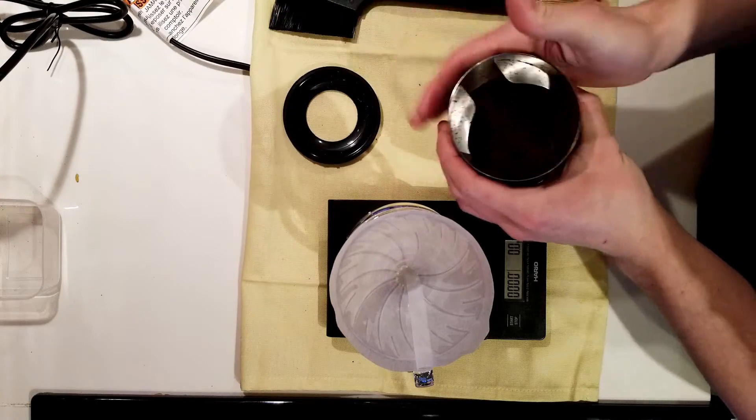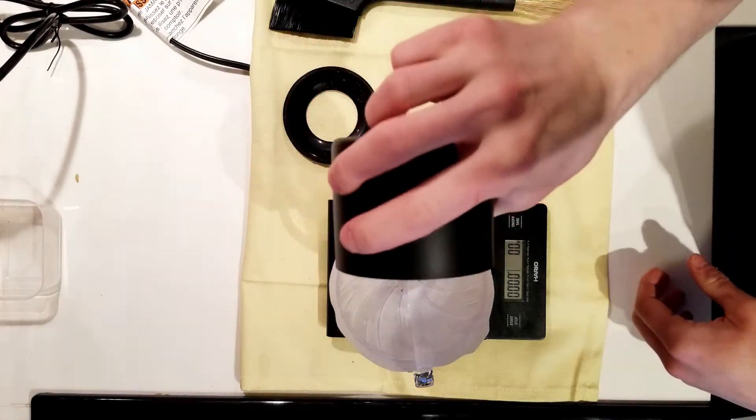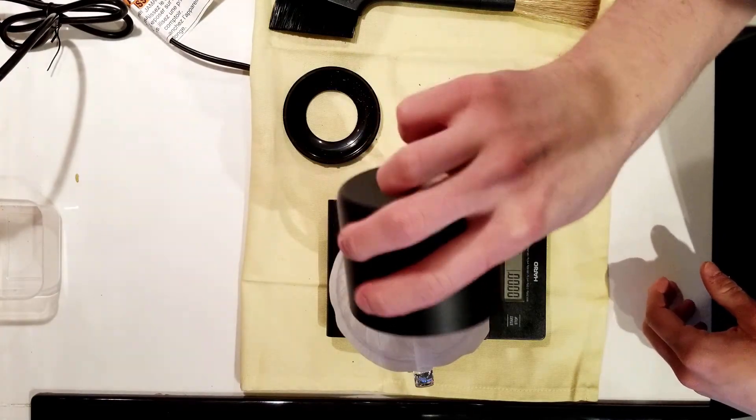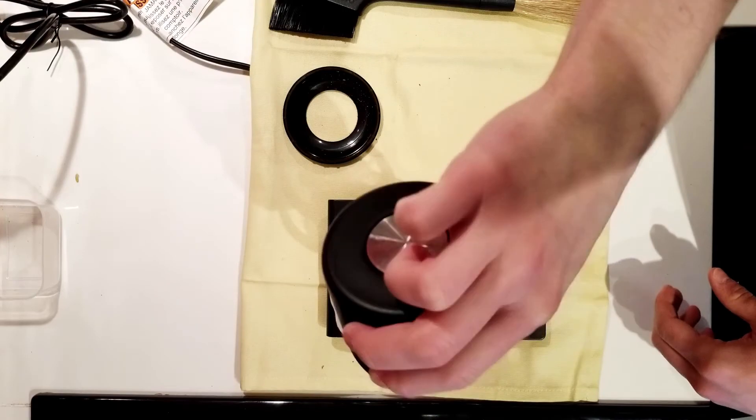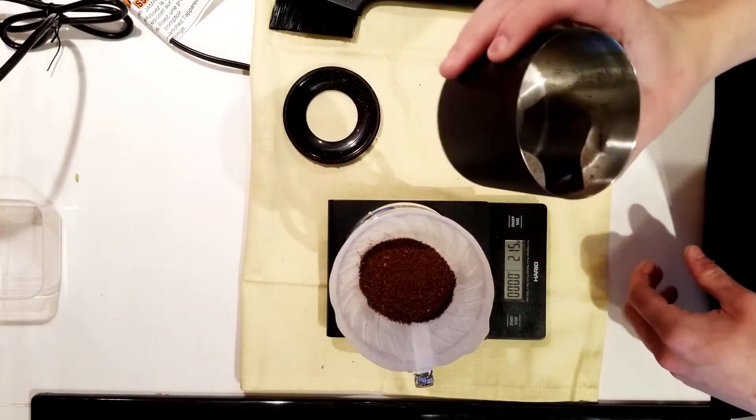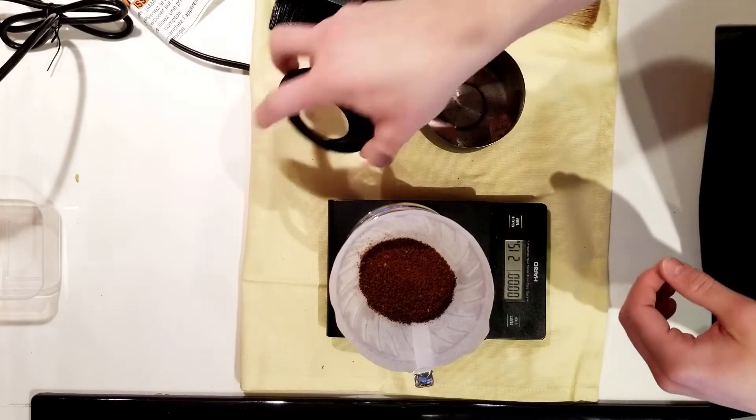Grab my ground coffee and make sure you zero out the scale before you add the coffee. You'll see I actually lost 0.5 grams that might have been left behind in the grinder or stuck to the sides of the grounds container. It's not a big deal, you just adjust the amount of water you use slightly.